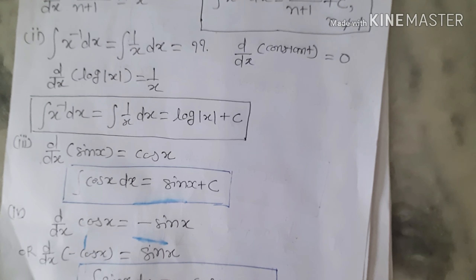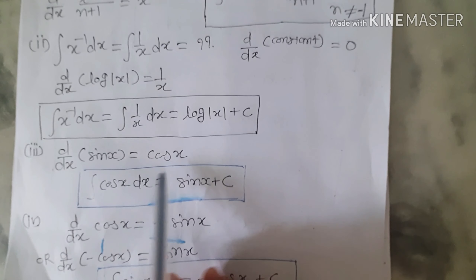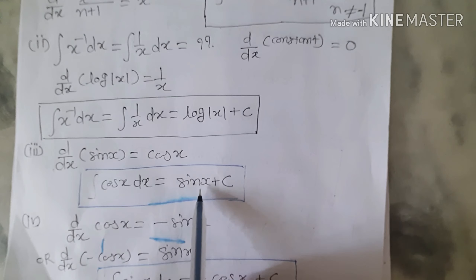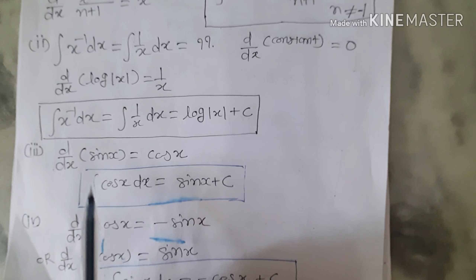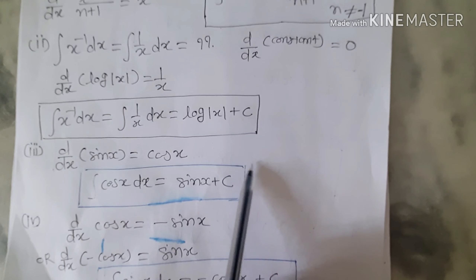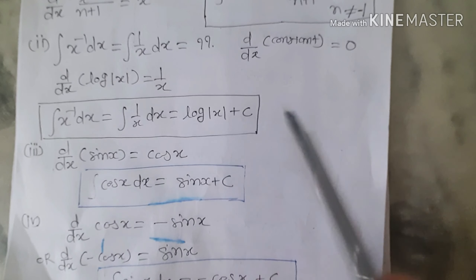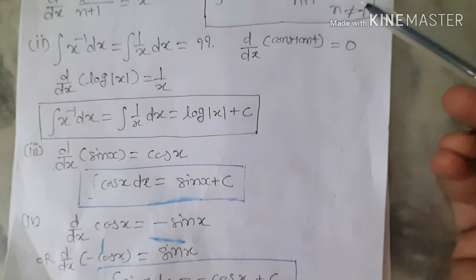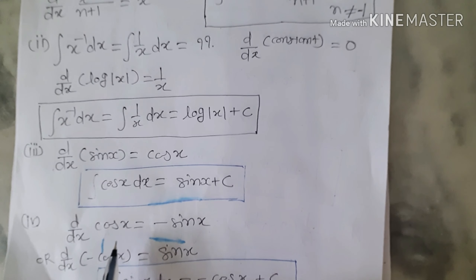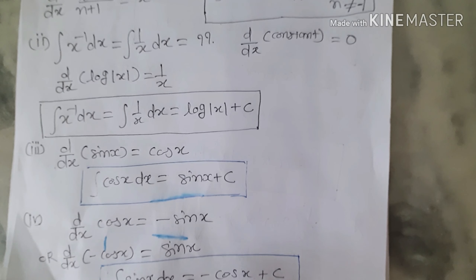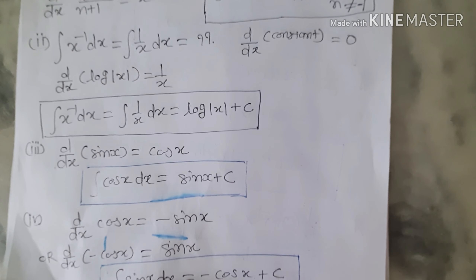Now, d/dx of sin x equals cos x, so integral of cos x equals sin x plus c. Also, d/dx of cos x equals -sin x. Multiplying both sides by -1, d/dx of (-cos x) equals sin x. So integral of sin x dx equals -cos x plus c.